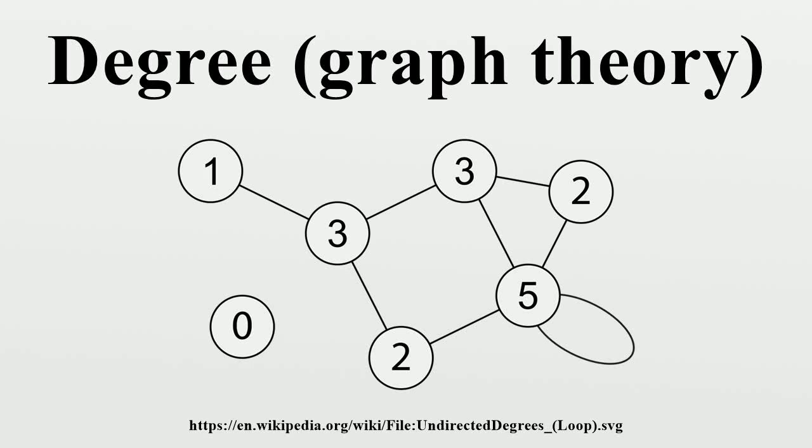In graph theory, the degree of a vertex of a graph is the number of edges incident to the vertex, with loops counted twice.